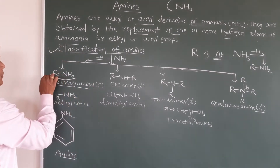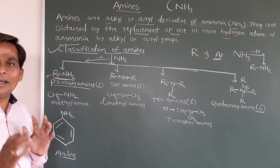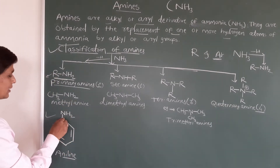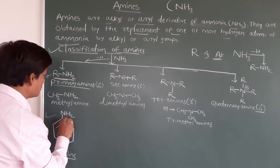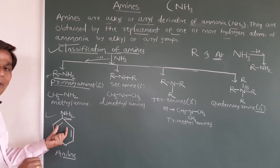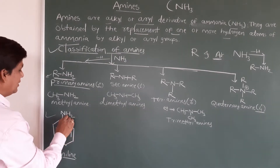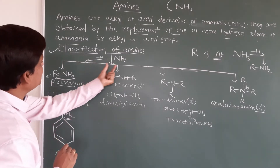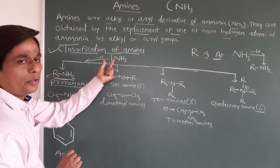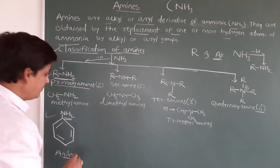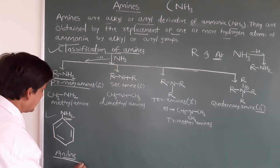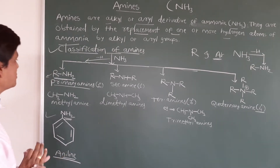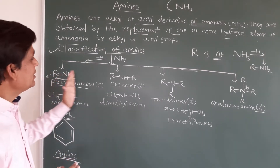Instead of the R group, if you take an aromatic ring — a benzene ring — with an NH2 group, then from benzene one hydrogen is replaced by the NH2 group. Alternatively, from ammonia, one hydrogen is replaced by a benzene ring. This gives us aniline, which is an aromatic primary amine.